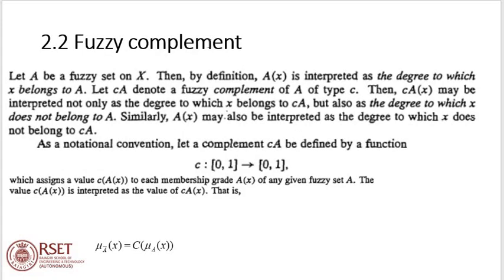The generalized Fuzzy complement: let A be a Fuzzy set on X, then A of x is interpreted as the degree to which x belongs to A. Let C_A denote the Fuzzy complement of A of type C. Then C_A of x may be interpreted not only as the degree to which x belongs to C_A, but also as the degree to which x does not belong to A, where C is a mapping from the closed interval [0,1] to the closed interval [0,1].